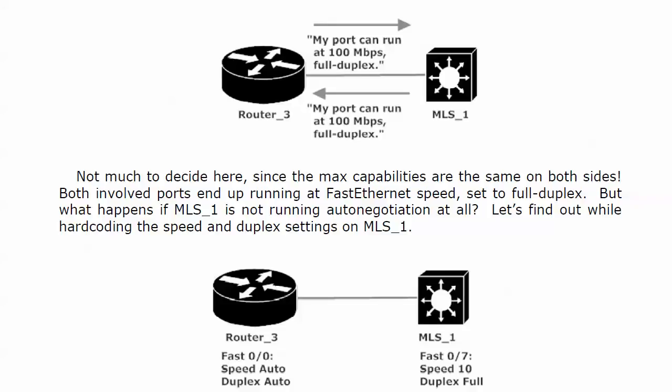But what happens if the switch is not running auto-negotiation at all? I've already set that port to a speed of 10 meg and a duplex setting of full. We're going to see exactly what that does to our connection on live equipment in just a moment.